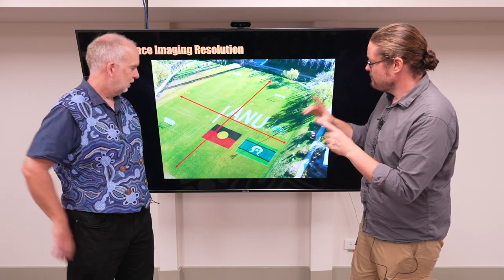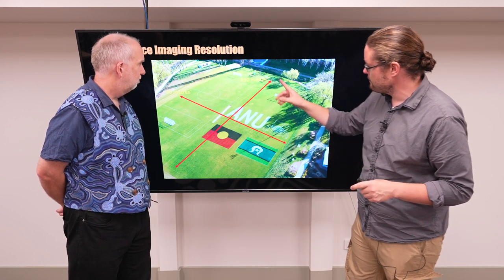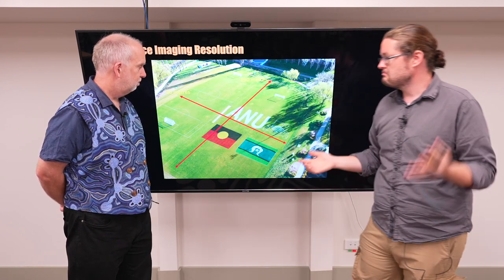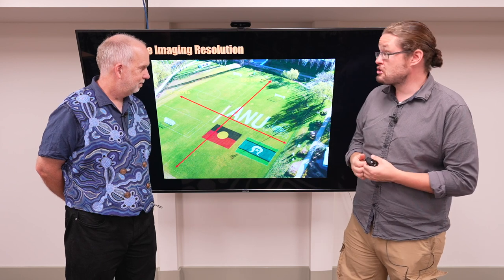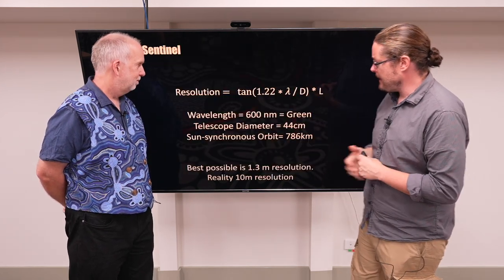So we have a nice oval, the Aboriginal and Torres Strait Islander flag, and the ANU crest. Well, if we go to a drone, you still see detail. But let's start looking at this. We'll say our oval is 80 meters by 130 meters—big.